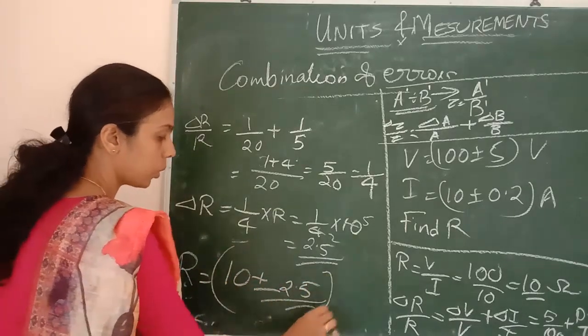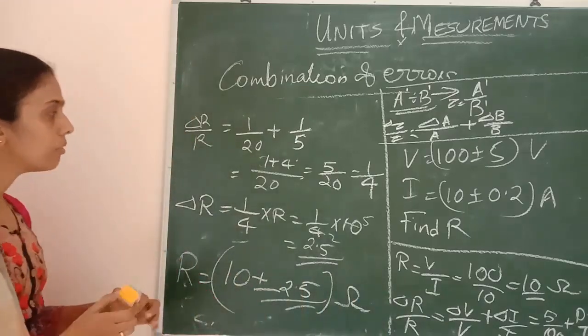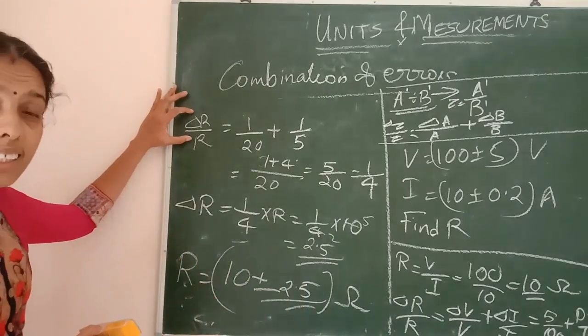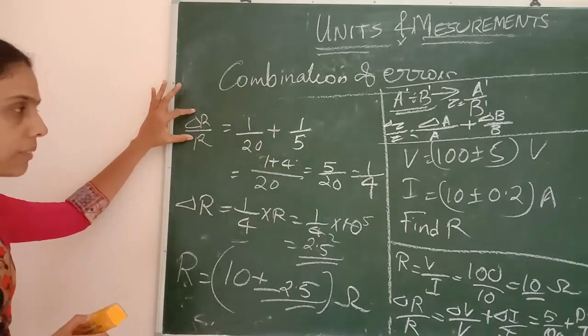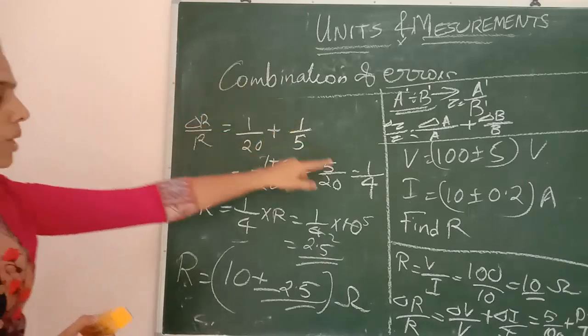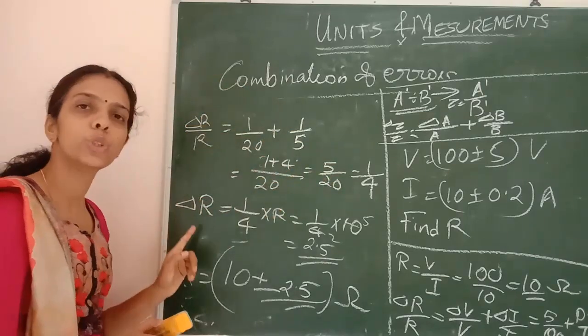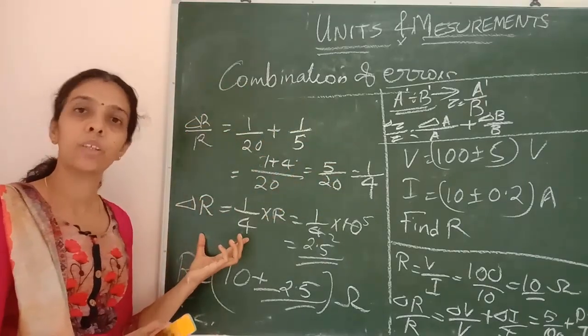So the final result of R is 10 plus or minus 2.5 ohm. Don't forget to find out the relative error first, then find delta R from it.